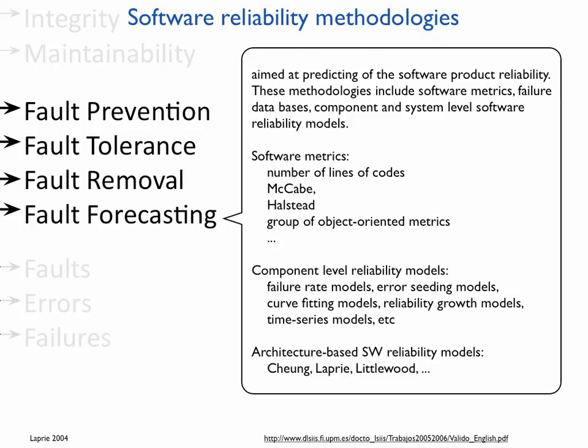There is also a big group of architecture-based software reliability models, or system-level reliability models. These models decompose the software into components and try to understand how those components interact with each other according to the control flow, data flow, and exchange of values and parameters. These are more intelligent models and they provide better estimation of software reliability.